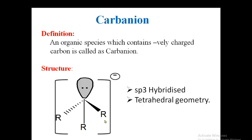There is an exception: if you have an allylic carbanion, that will be sp2 hybridized. So remember that. Usually, carbanions of this type are sp3 hybridized.